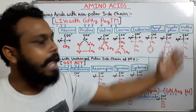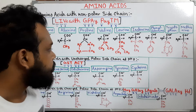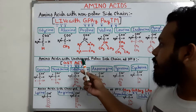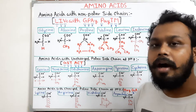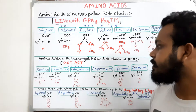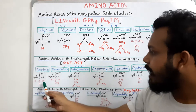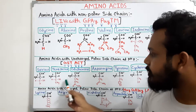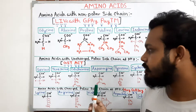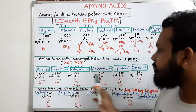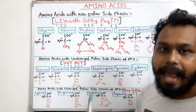Next is the uncharged polar side chain group. Polar means these amino acids love the water environment — they are hydrophilic — but they don't have any charge. They have a polar region in their side chain but no charged group. These six amino acids we will remember by the sentence: 'GST ACT.'